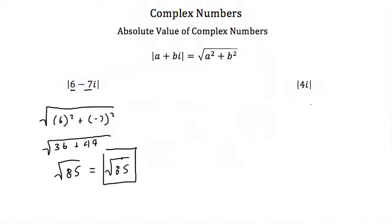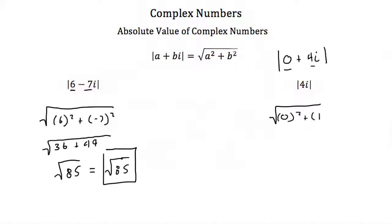If we have the absolute value of 4i, notice this complex number doesn't have a real part — this is 0 plus 4i. If it doesn't have a real part, we call this a purely imaginary number because it only has an imaginary part. But if we write it as 0 plus 4i, then we can take our absolute value of it. 0 would be our a and 4 would be our b, so this is the square root of 0 squared plus 4 squared. 0 squared is 0, 4 squared is 16, and the square root of 16 is just 4. So the absolute value of 4i is just 4.